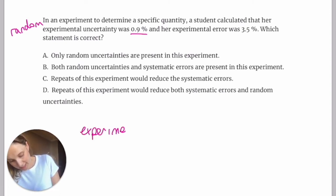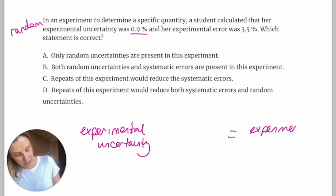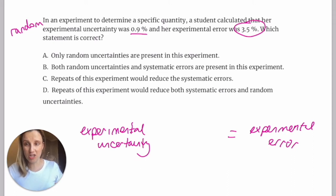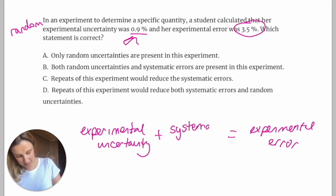So generally speaking, our experimental or random uncertainty leads us to our experimental error. So experimental error is how wrong your experiment was based on the literature value, like how far away from the literature value were you? So you can see here that her experimental error was 3.5%. She was way further off from the literature value than she should have been based on her equipment.